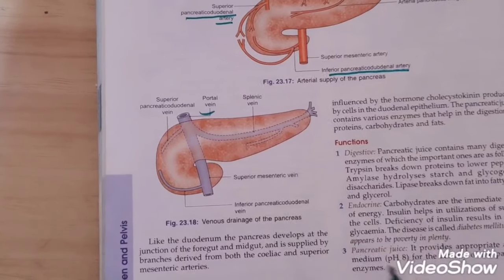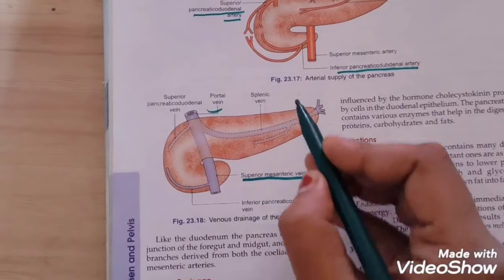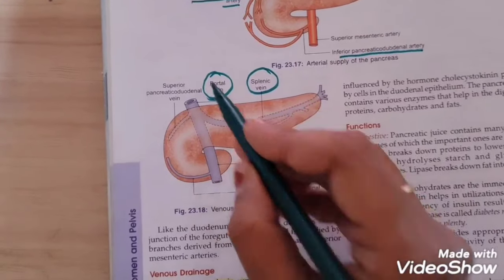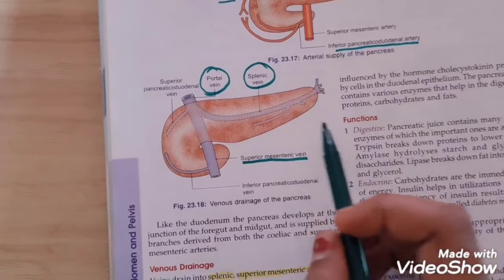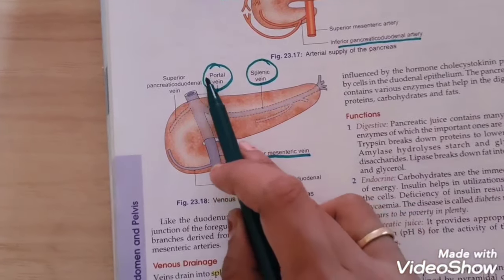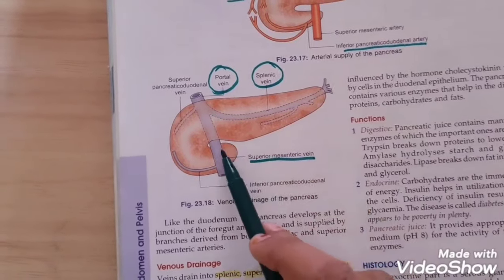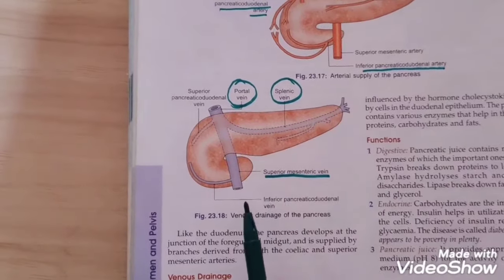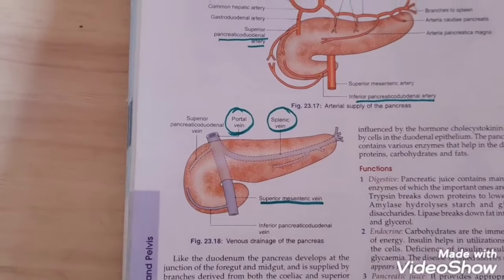Now coming to the venous drainage. Venous drainage is through the superior mesenteric vein, splenic vein, and portal vein. The superior mesenteric vein and splenic vein join to form the portal vein. So three veins are involved in the venous drainage of the pancreas.